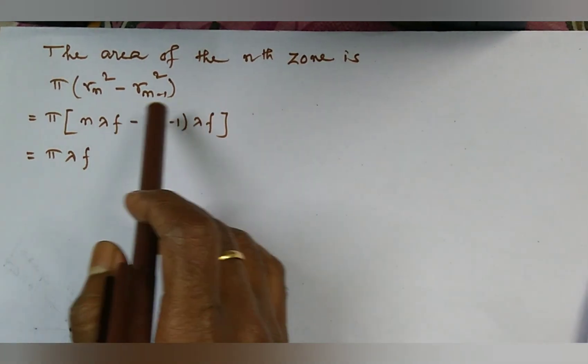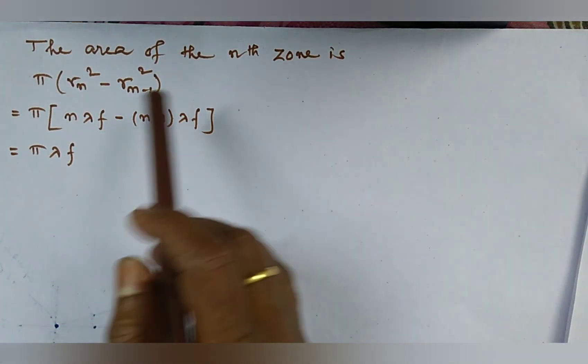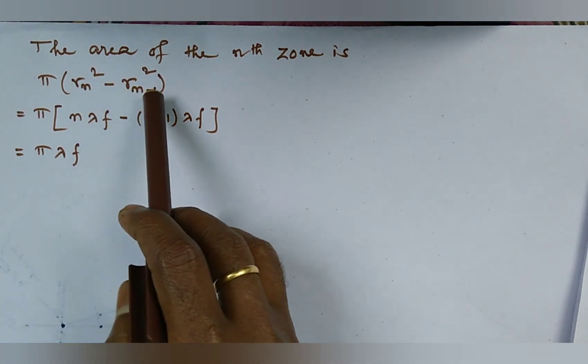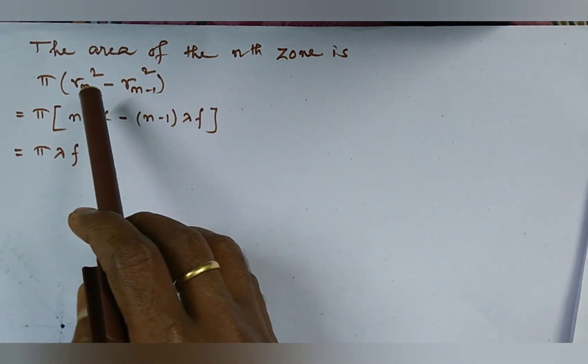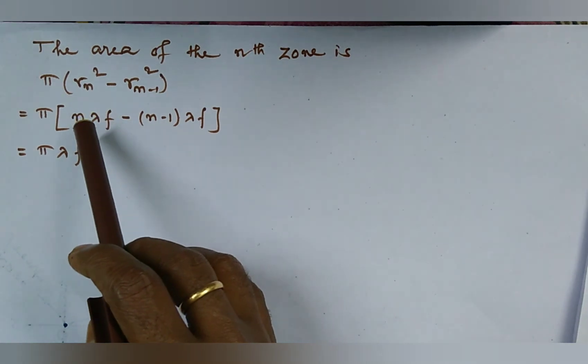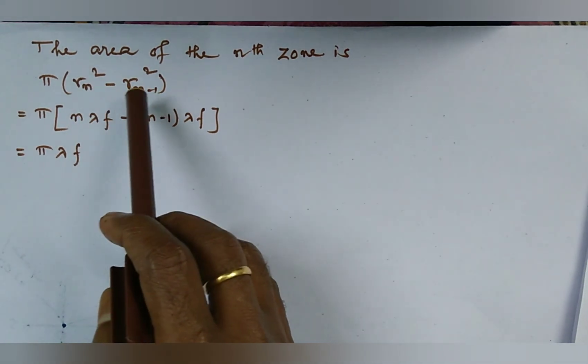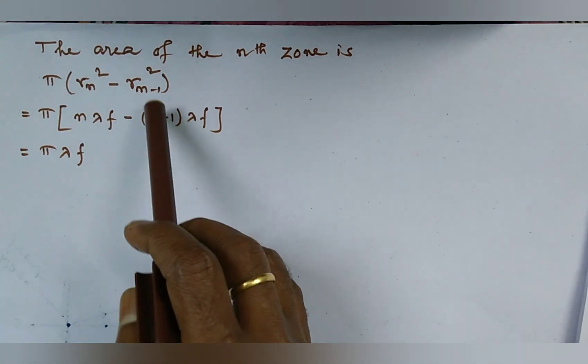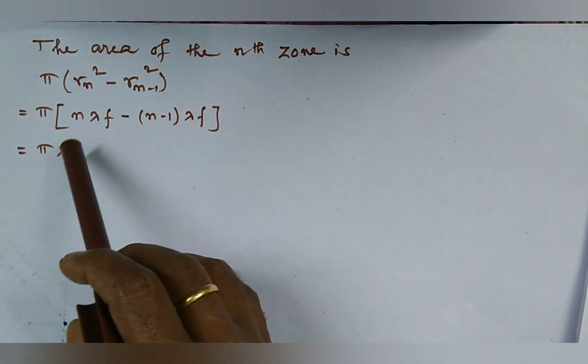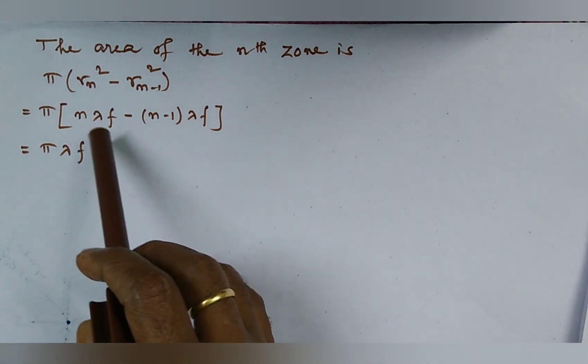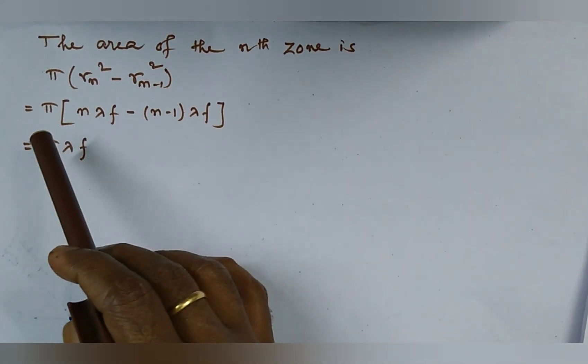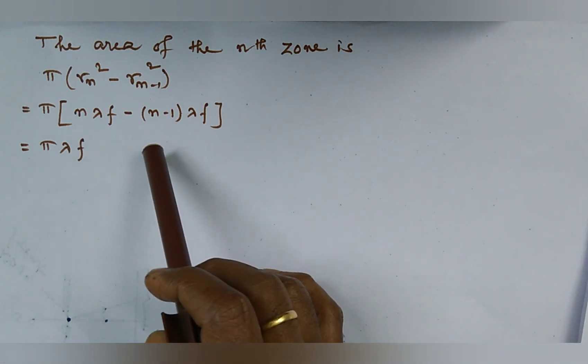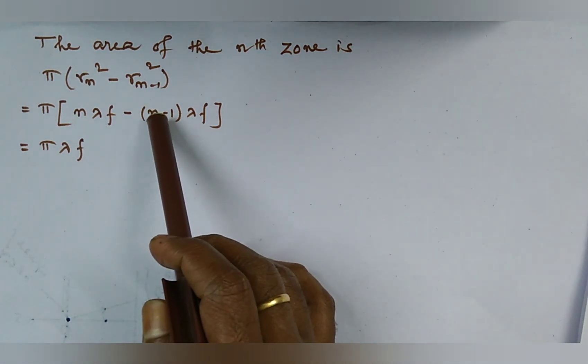Then the area of Nth zone will be Pi Rn square minus Pi Rn minus 1 square and Rn square is equal to N lambda F. And we put the value of Rn square and Rn minus 1 square then we get Pi lambda F this is also the constant term as it is independent of the order number that is N.